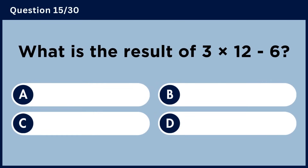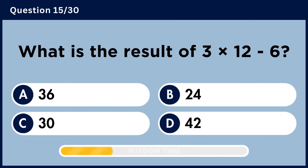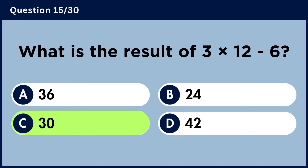What is the result of 3 multiplied by 12 minus 6? Answer C, 30.